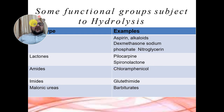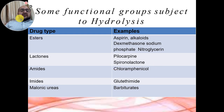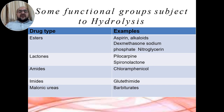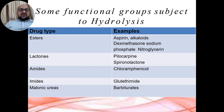You can see in the table that some functional groups are subject to hydrolysis. The first one is the ester group. The drug types include lactones, amides, and malonyl ureas. Examples of esters include aspirin, alkaloids, dexamethasone sodium phosphate, and nitroglycerin. These are the examples belonging to the ester group.